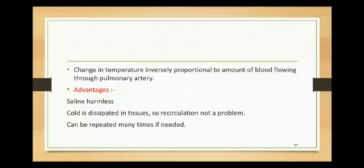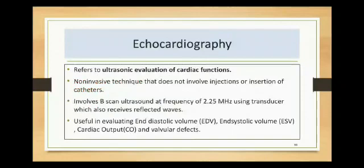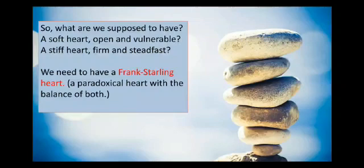Advantages of thermodilution: cold saline is harmless and is dissipated in tissue so recirculation is not a problem, and it can be repeated many times if needed. Echocardiography is a non-invasive procedure involving ultrasonic evaluation of cardiac function at a frequency of 2.25 MHz using a transducer that receives reflected waves. It provides end-diastolic volume, end-systolic volume, cardiac output, valvular defects, and ejection fraction without catheters or injections. A Frank-Starling heart needs to be soft to receive blood during diastole and stiff to eject during systole - a balance between the two.